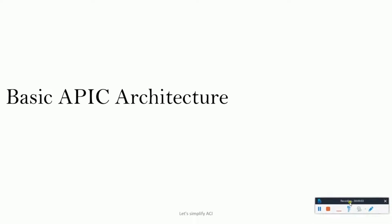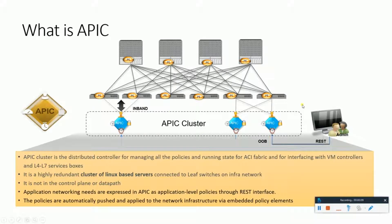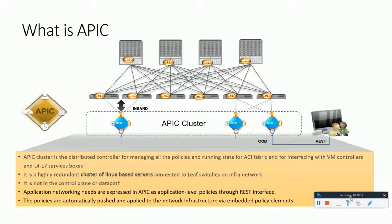Let's understand the basic APIC architecture — this is what the overall look and feel of the APIC fabric would look like. The APIC cluster is basically the distributed controller for managing all the policies and running state for the ACI fabric, and for interfacing with VM controllers, or if you are attaching any L4 to L7 service boxes to the ACI APIC. This whole fabric is a highly redundant cluster of Linux-based servers — the C220 M3 servers that we talked about in the initial slides — which are connected to leaf switches on the infrastructure network.